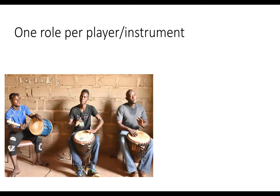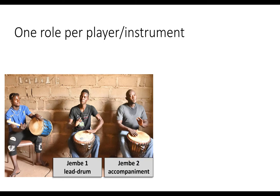One methodological advantage here is that in chamber music, distinct socio-musical roles are stably allotted to specific instruments. In the case of a djembe trio, the first djembe plays a highly improvisatory and variative lead part, whereas the second djembe plays a simple and invariant accompaniment part, and the dundun plays a so-called timeline pattern, which is of intermediate complexity.